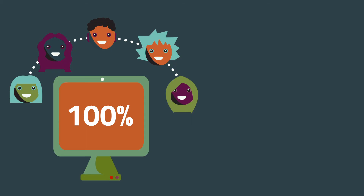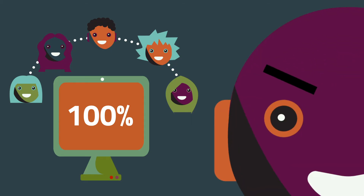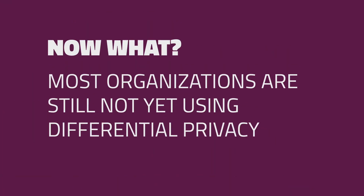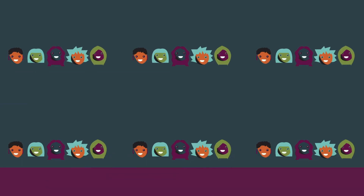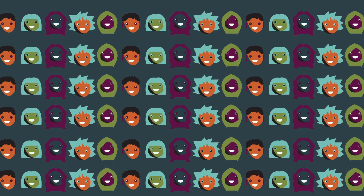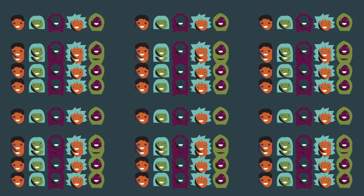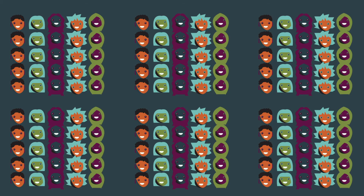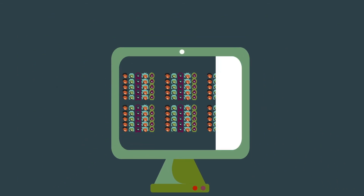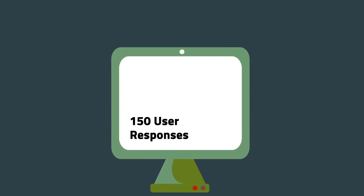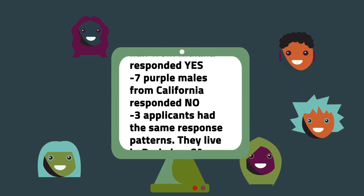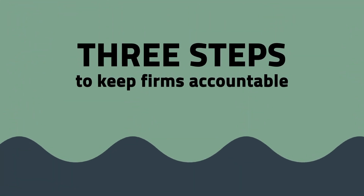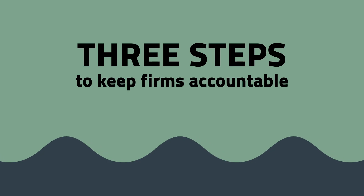Differential privacy can make data less attractive to would-be attackers, and prevent them from connecting data from multiple platforms. Yet most organizations are still not using differential privacy. For all its benefits, it requires large data sets and is still pretty complicated, and it can be difficult to know when to use it. Some organizations may not want to reveal just how much personal data they're using and leaking, but there are steps that we can take to hold firms accountable.